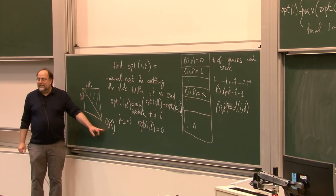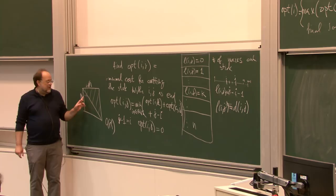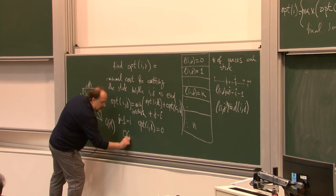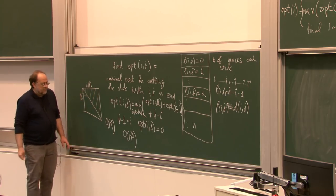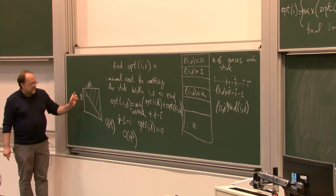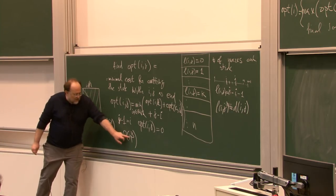How much does each recursion step cost you, in general, on average? That's kind of tricky to tell, but the worst case is obviously O(n). So the total algorithm will run in time O(n³). I'm not sure whether this is the tightest bound, but as you proceed with chopping the sizes, I think this is correct — it's O(n³).